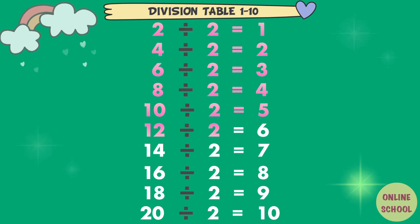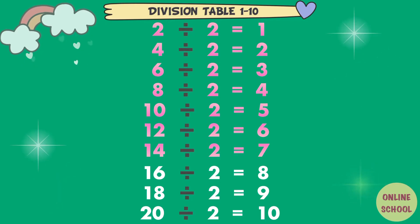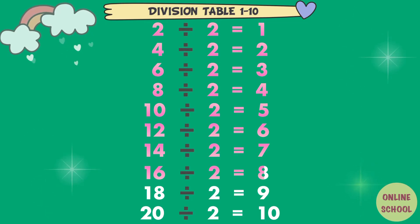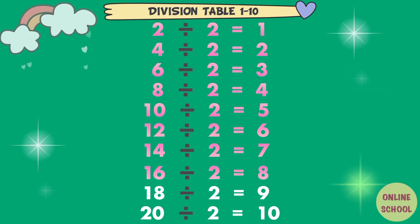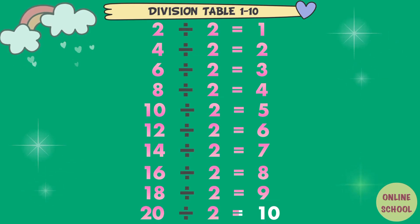12 divided by 2 equals 6. 14 divided by 2 equals 7. 16 divided by 2 equals 8. 18 divided by 2 equals 9. 20 divided by 2 equals 10. Divided by 3.